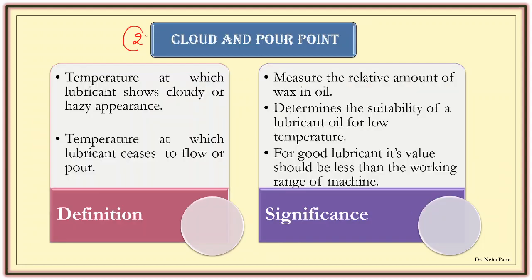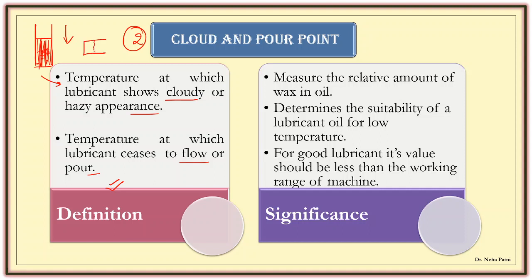The second property is cloud and pour point. Cloud point is the temperature at which the lubricant shows cloudiness or haziness. The first time cloudiness appears in the lubricant, you note that temperature as the cloud point. The temperature when the lubricant ceases to flow — stops pouring — that temperature is the pour point. Imagine coconut oil in a flask: if you decrease the temperature, initially a wax particle or precipitate causes cloudiness. You note that temperature as the cloud point. When you tilt it and it stops flowing, that temperature is the pour point.